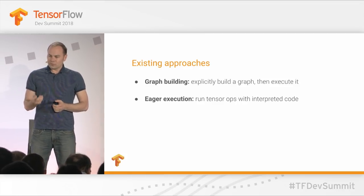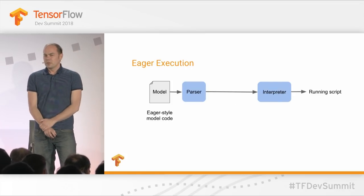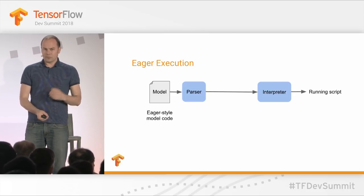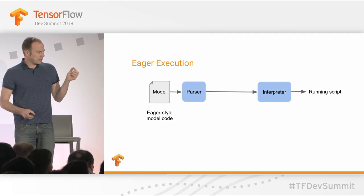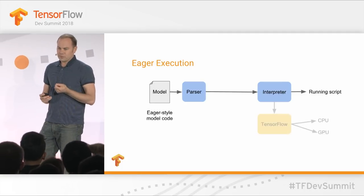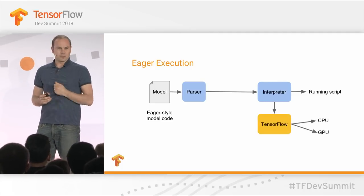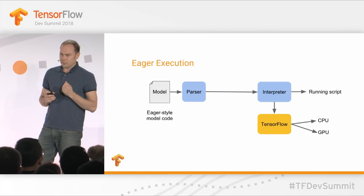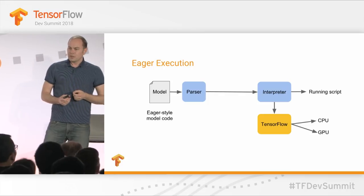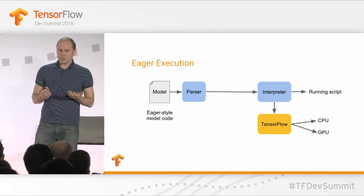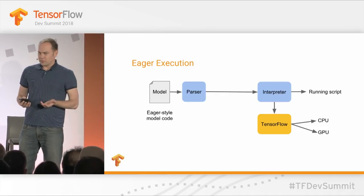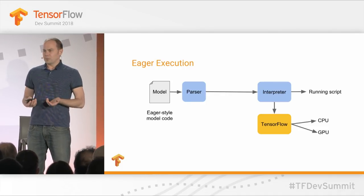It's interesting to look at how these approaches actually work. In the case of eager execution, you write your model, Python starts out by parsing it, and then it feeds every statement at a time to the interpreter. If it's a tensor operation, it fires up TensorFlow and hands it off, and TensorFlow takes care of your tensor operations; otherwise, the Python interpreter runs it. The key thing about eager execution and graph building is that they're designed within the constraints of what you can do as a Python library.